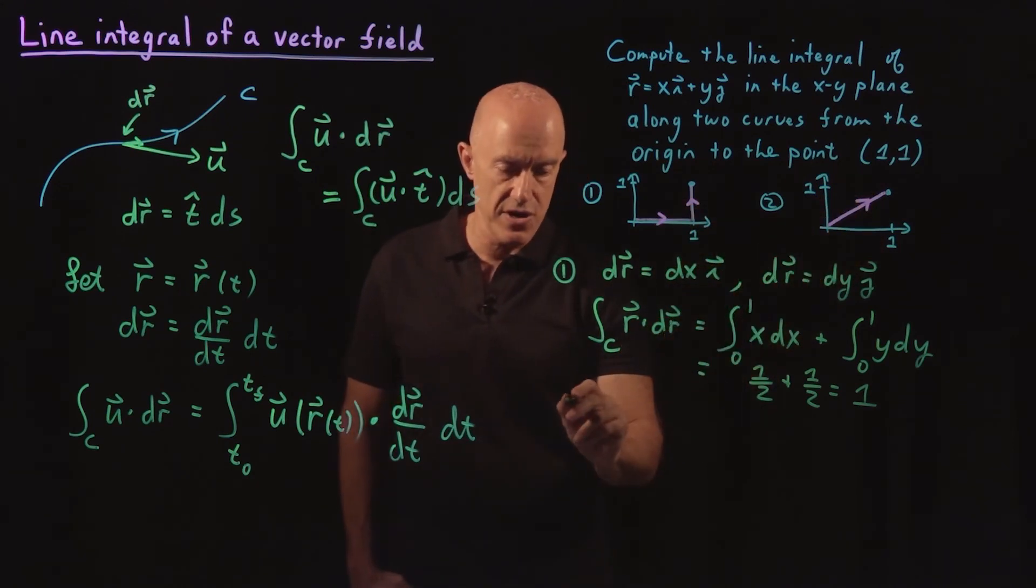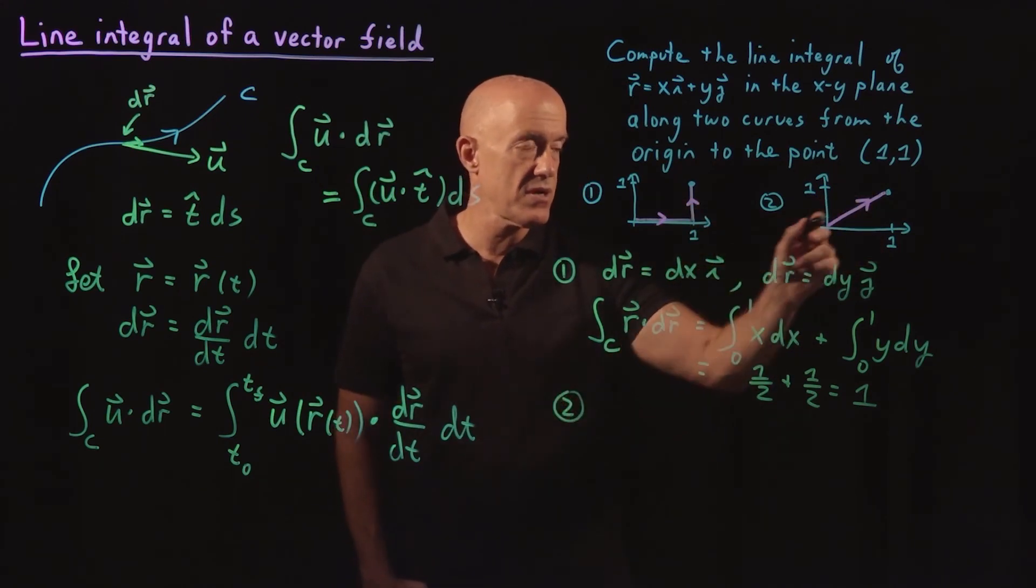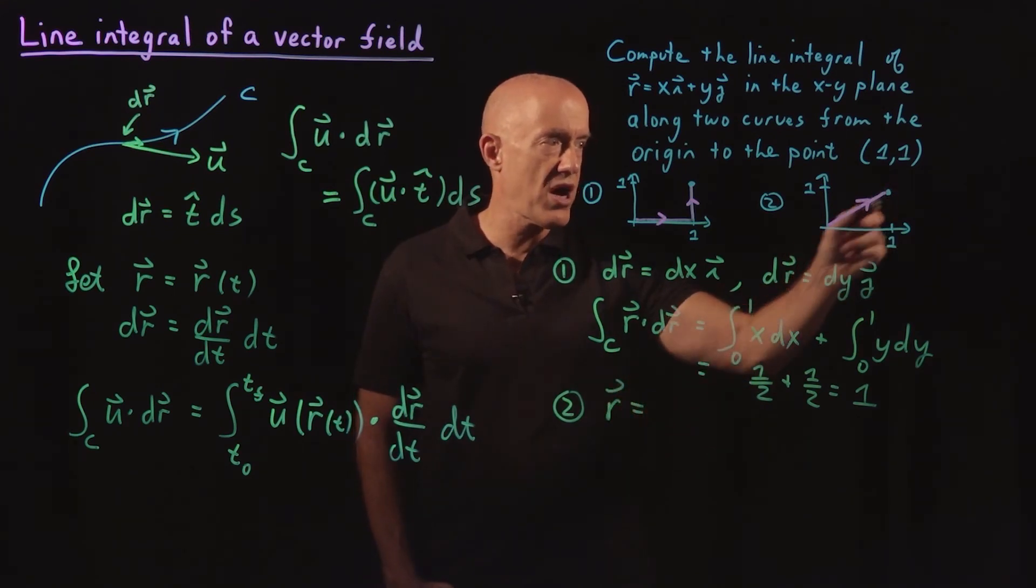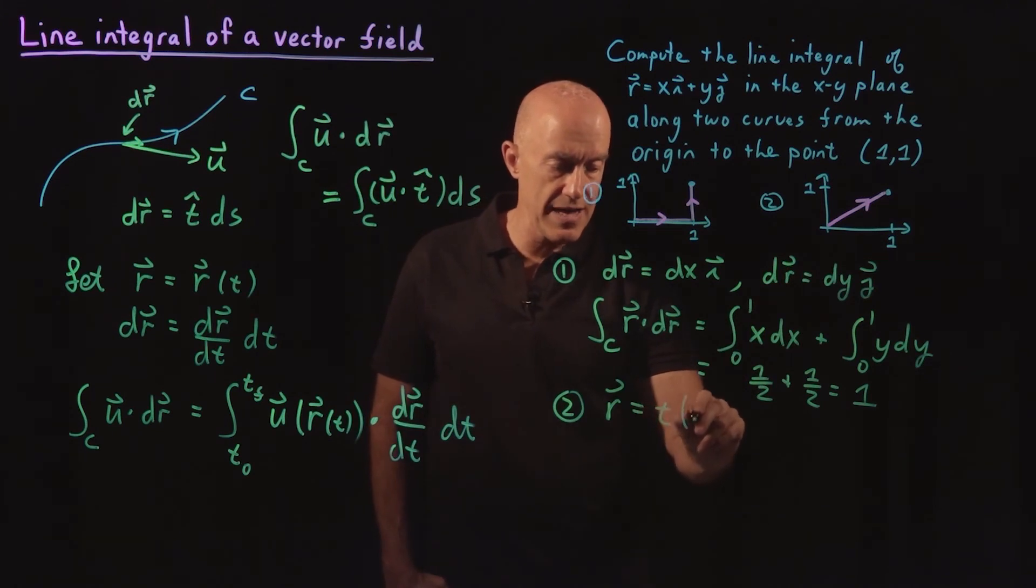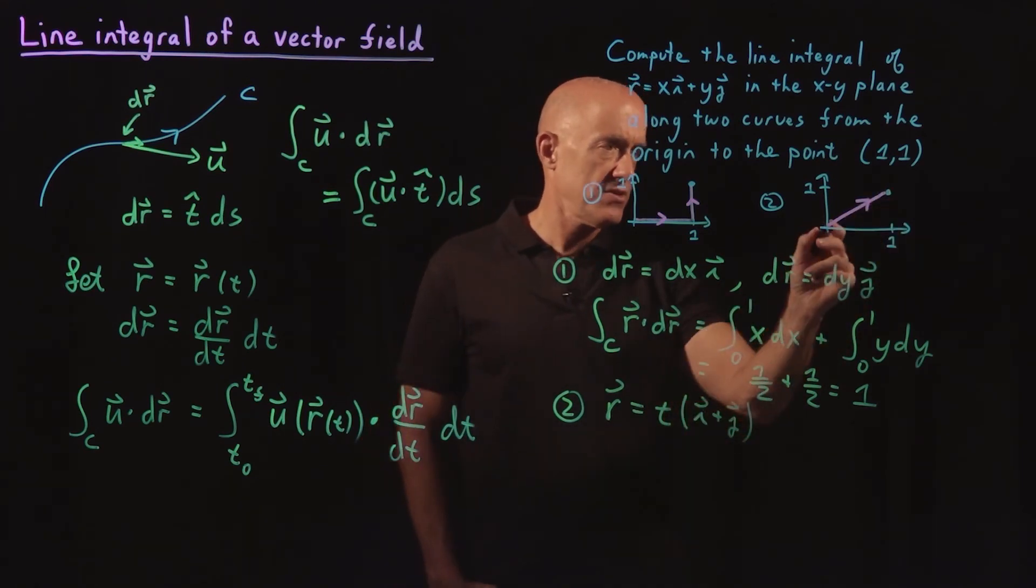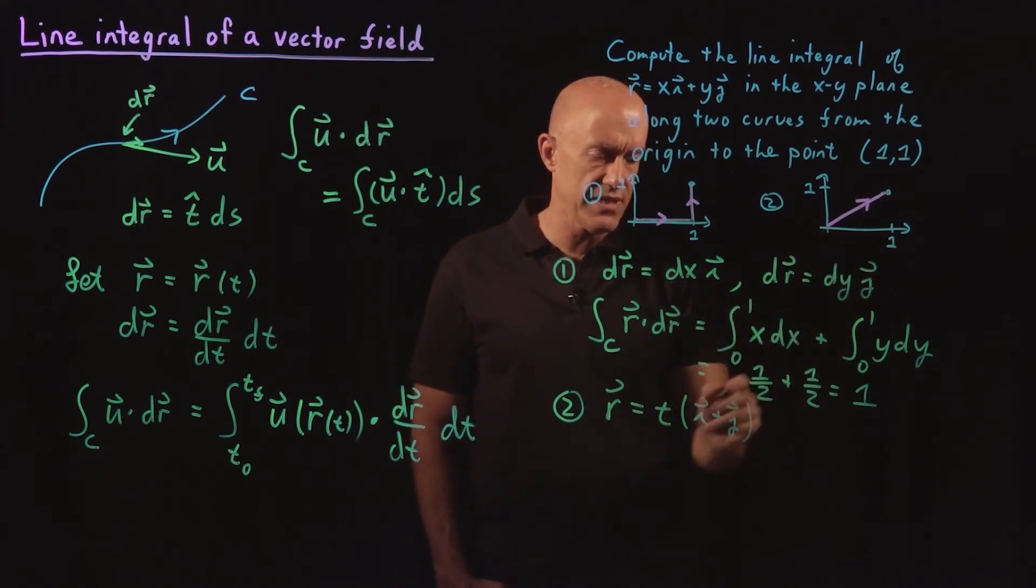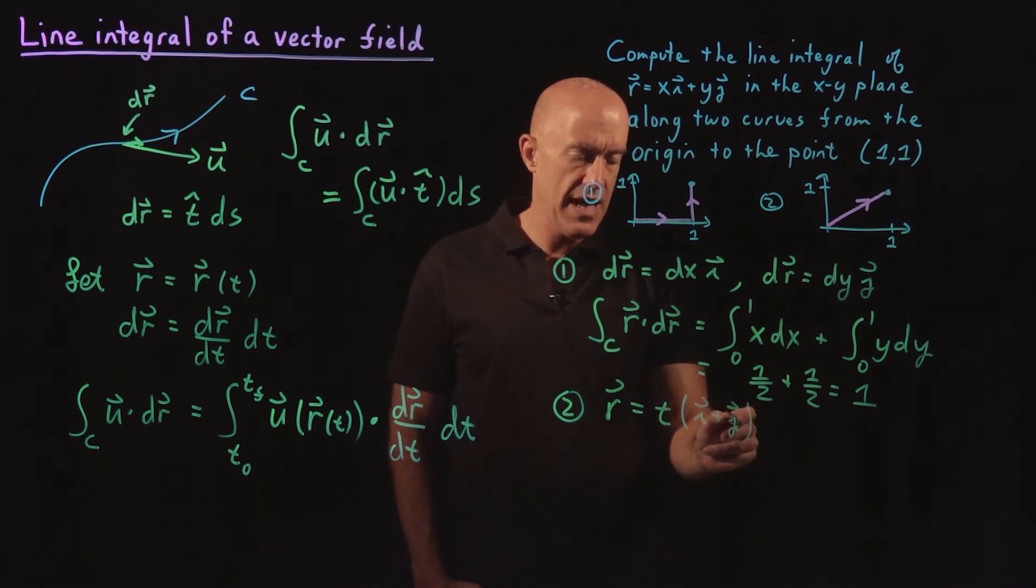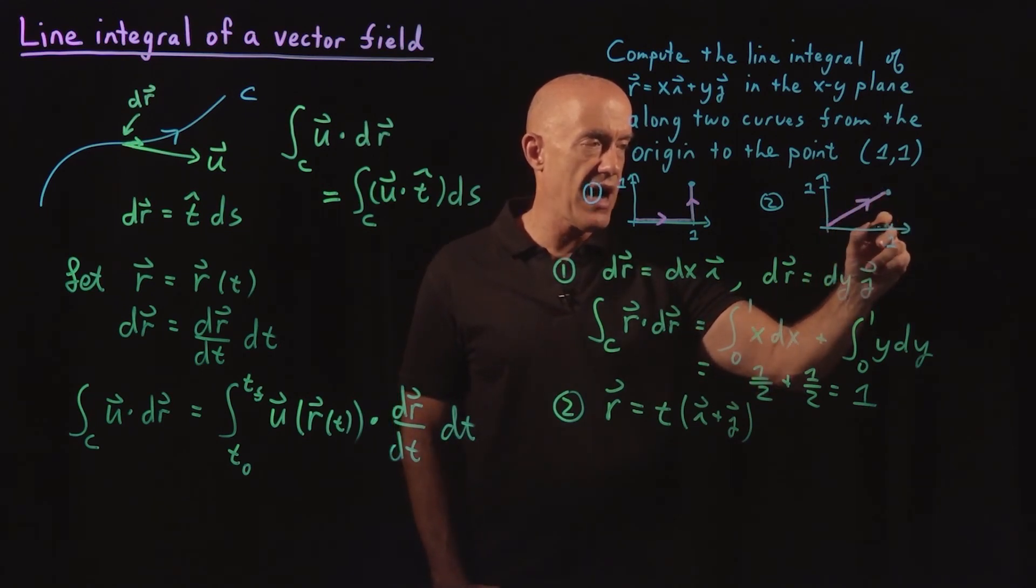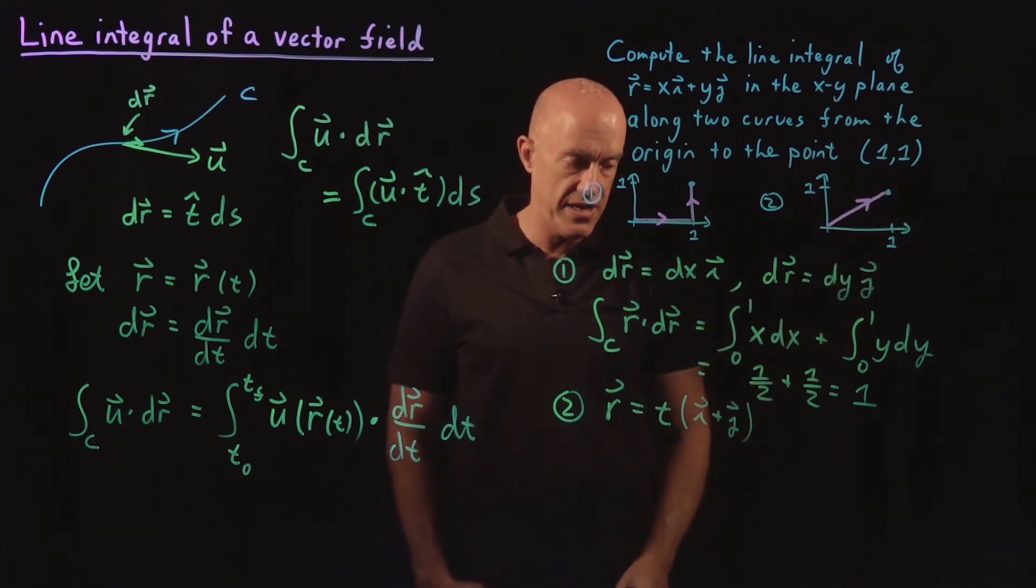What about the second curve? So curve number 2. What is R here? We can parametrize R as t times (i plus j). So it's going along this diagonal. The x value is always equal to the y value. And then t goes from 0 to 1. So this point here is just the i unit vector plus the j unit vector.